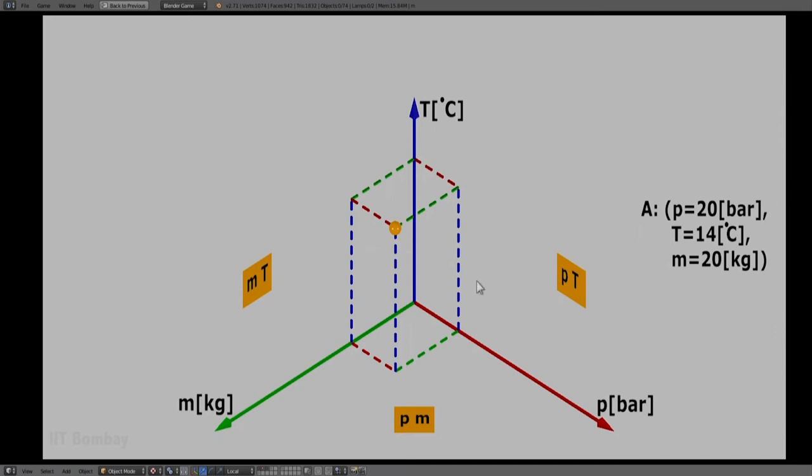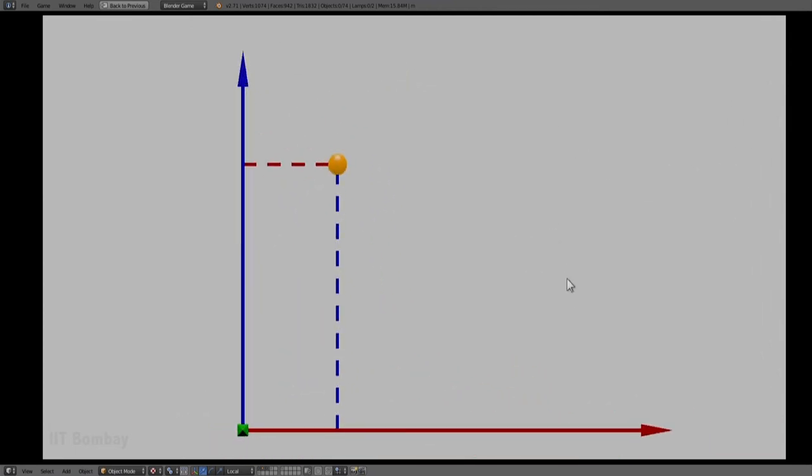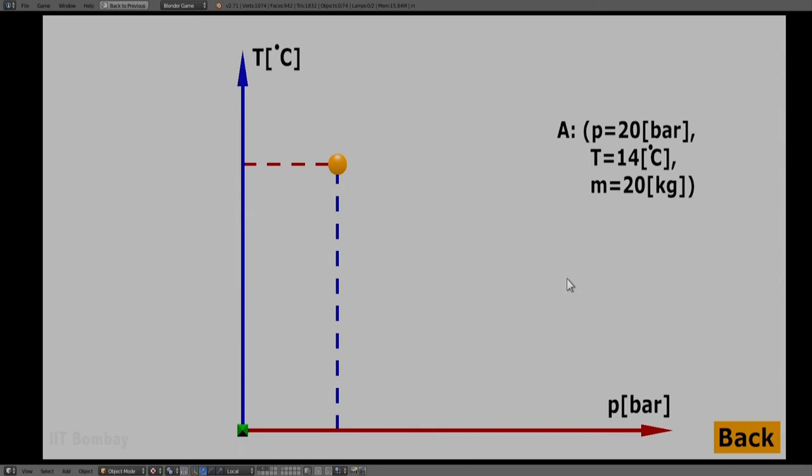And we can have our state space and the state projected on any two-dimensional projection. For example, we can have the pressure-temperature projection. You will see the pressure-temperature projection here. Mass is not directly represented.